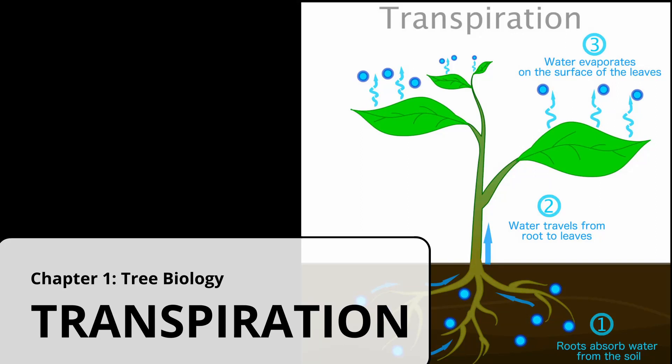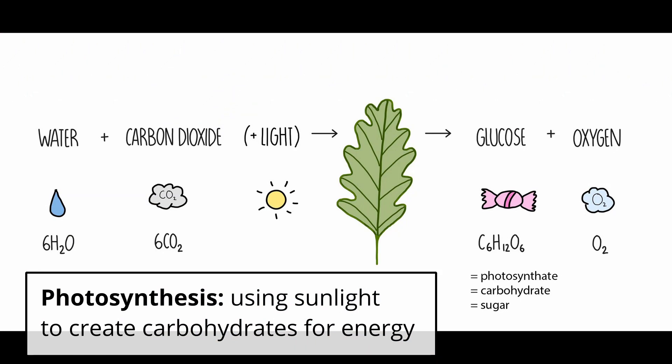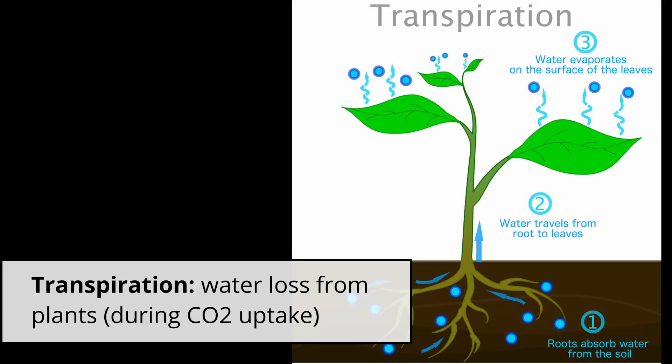This video covers transpiration, or how plants lose water. In a separate video on photosynthesis, I explained how plants can capture energy from the sun, convert it to sugar, and store it until they need energy. When they do need energy, the reverse reaction occurs, and that's called respiration. Being able to create, store, and liquidate your own energy source is great, but there are trade-offs. A major one is water loss, also known as transpiration.